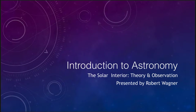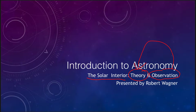Greetings and welcome to the introduction to astronomy. In this lecture we are going to talk about the interior of the Sun and some of the theory that goes along with it, and observations that are made to help us confirm the theory as we work through a scientific method. One of the difficulties is that we do not see the center of the Sun directly — we cannot see the interior — so we have to make theories and models and then use observations of the things we can see to confirm or modify those models.